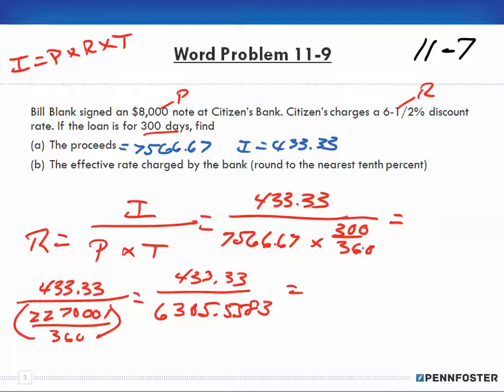And we divide that into the $433.33 and we end up with 0.0687 as a decimal. And we're doing this to the nearest tenth percent. So convert the decimal to a percentage, we move the decimal over two places, we get 6.87. And since we're looking at the tenths, we round up, so we end up 6.9% is the effective rate.